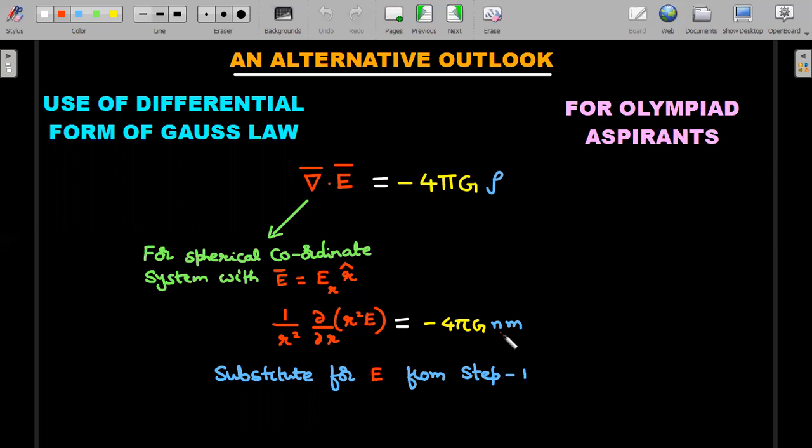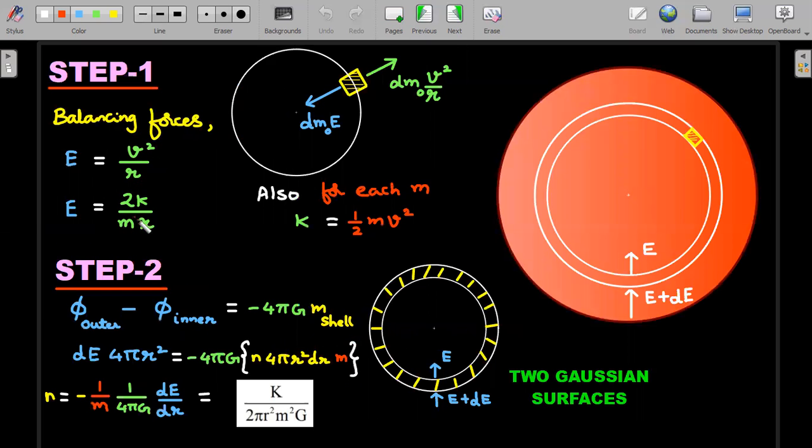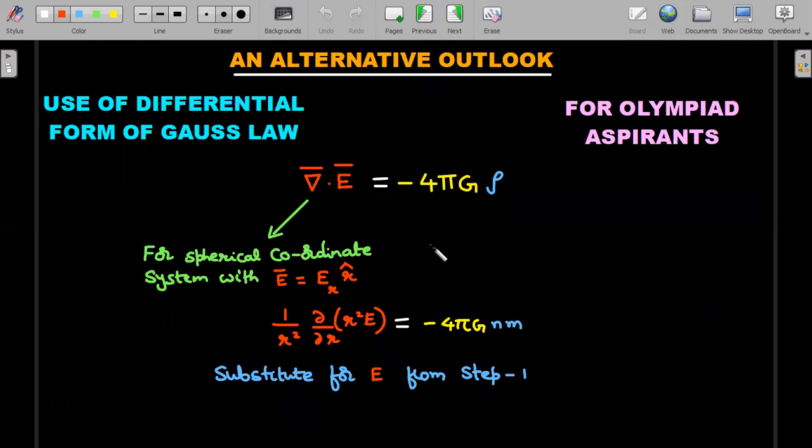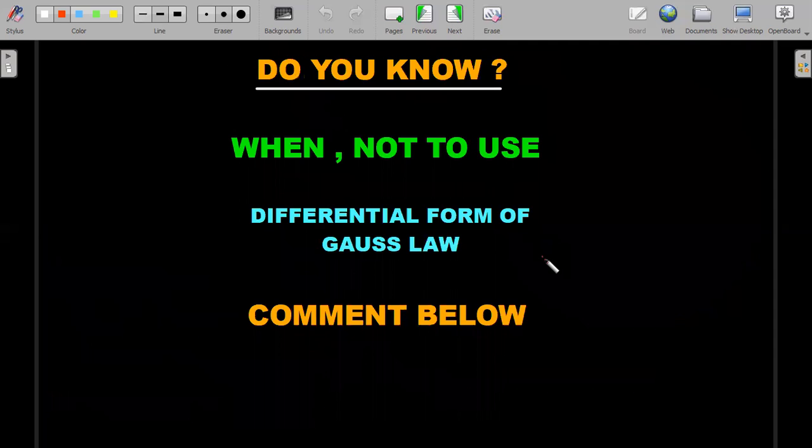The value of the divergence is given by (1/r²)(d/dr)(r²E) = -4πGnm. The value of ρ I have written as number per unit volume multiplied by the mass of each particle, which gives the density. If you substitute the value of capital E from Step 1, Step 1 is unavoidable. Only for Step 2 you could have used the differential form of Gauss's law.